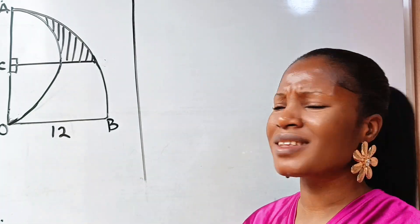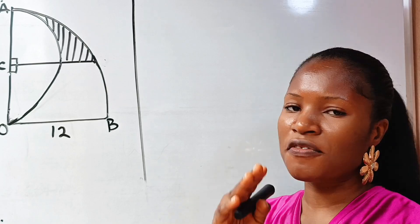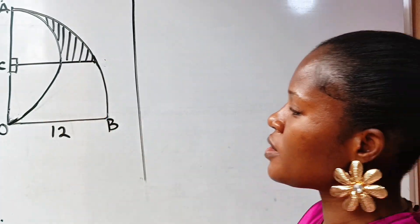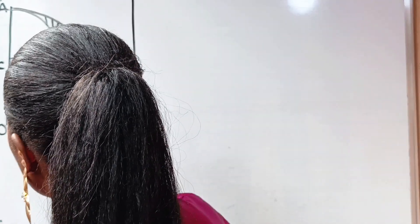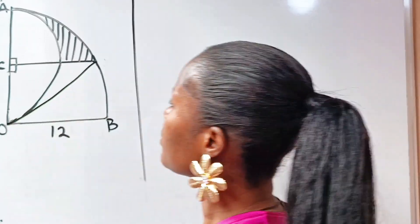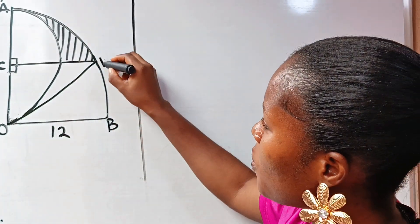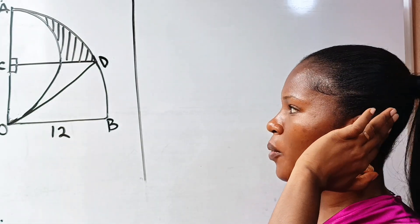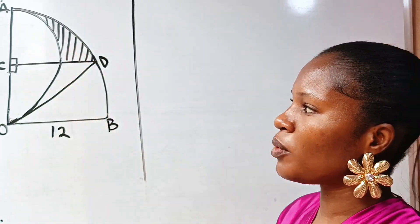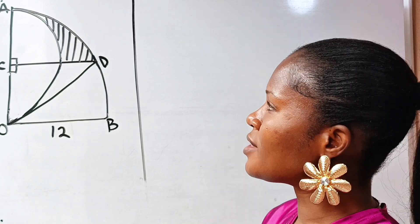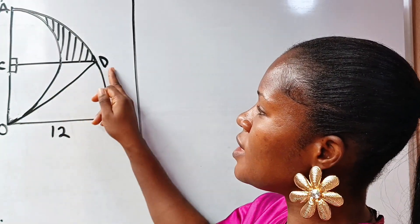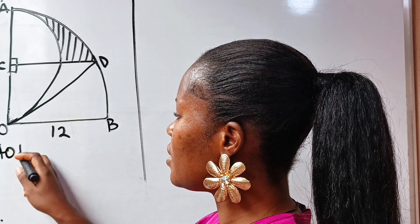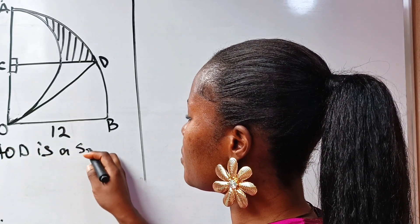Now, how do we get the area of this shaded portion? First, permit me to join O to this point using a straight line. Let's call this point D. Now, you can see that AOD is a sector of a circle.